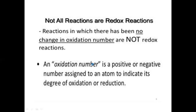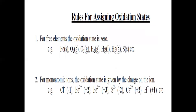What is the meaning of the term 'oxidation number'? The oxidation number is a positive or negative number assigned to an atom to indicate its degree of oxidation or reduction. It is a number assigned to any atom based on how many electrons it donates or accepts.